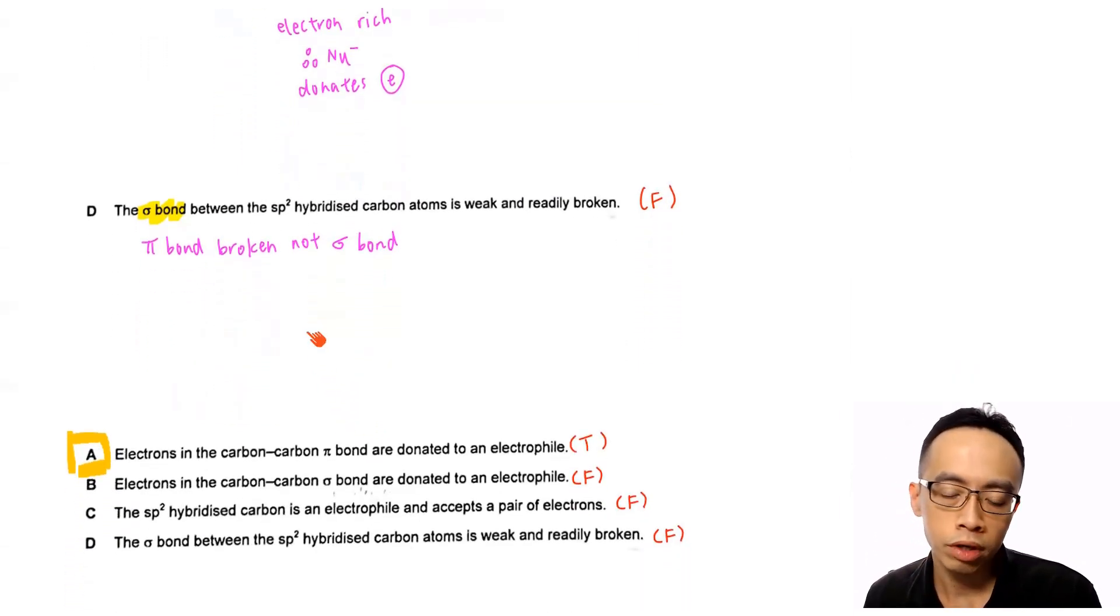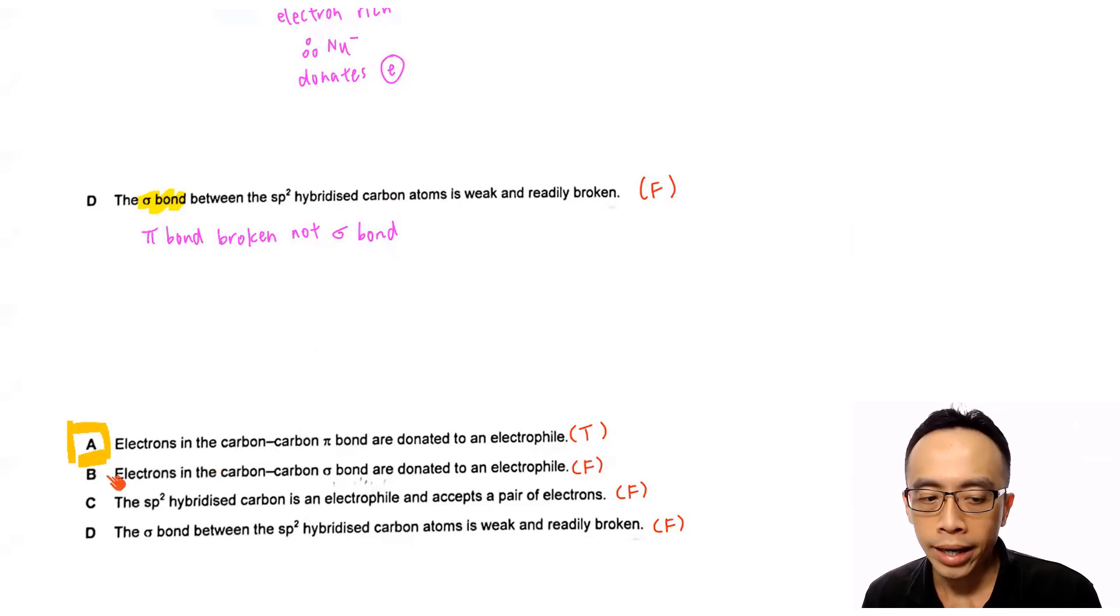So what we can do now is we can run through the options A, B, C, D. My statement A, where electrons in the carbon-carbon pi bonds are donated to my electrophile, this is the correct statement. All the rest of the options are not true. So the answer to this exercise would be option A. So that was the discussion involving this pretty straightforward question involving the mechanism for alkene's electrophilic addition reaction. So if you have learned something useful from this video, please give me the thumbs up, like this video, and subscribe to my YouTube channel for more weekly video lessons. That's all for now. I'll see you next week.